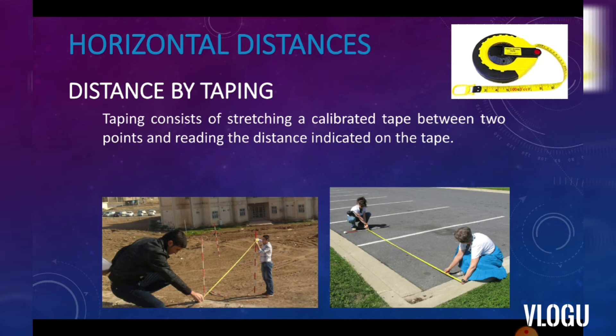In illustration number two, the two men are measuring the horizontal distances along the ground. This is HD, horizontal distance. From point A up to point B. This is a straight line. We will consider that this is straight.